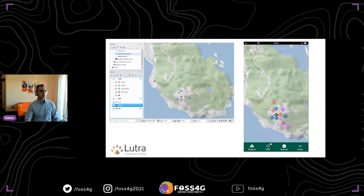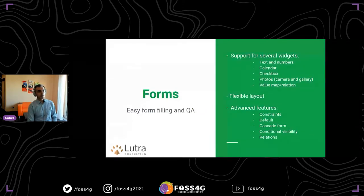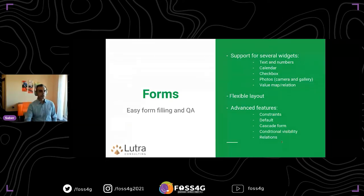The left side is the map in QGIS, and as you open it in the app, you will see the same map and same data in the Input app — it supports all the complex symbologies and styling from QGIS. Likewise with forms, it supports all sorts of different types of widgets like calendar, checkboxes, photos, relations. You can have flexible layouts, and advanced features like constraints to make sure the data you collect complies with your data model. You also have defaults and relations so you can link your data as you collect them.